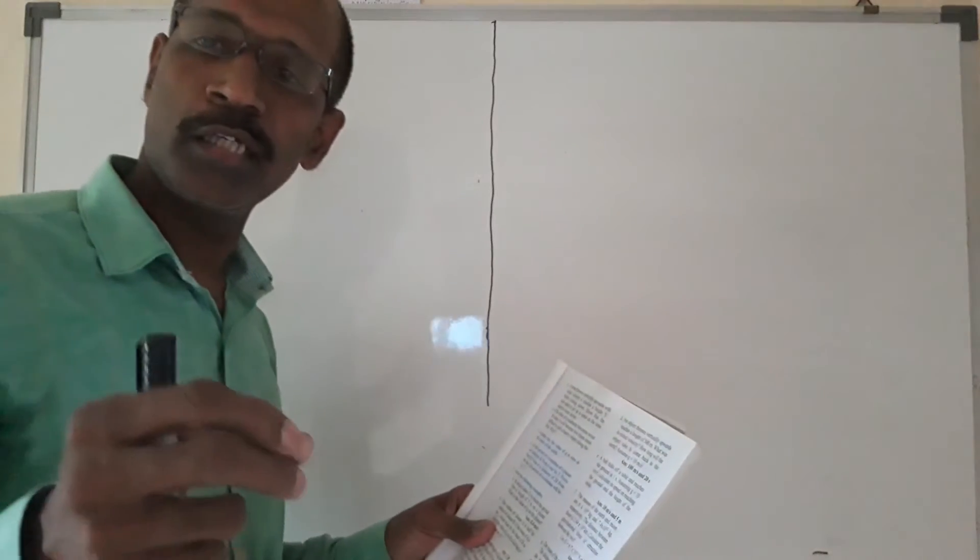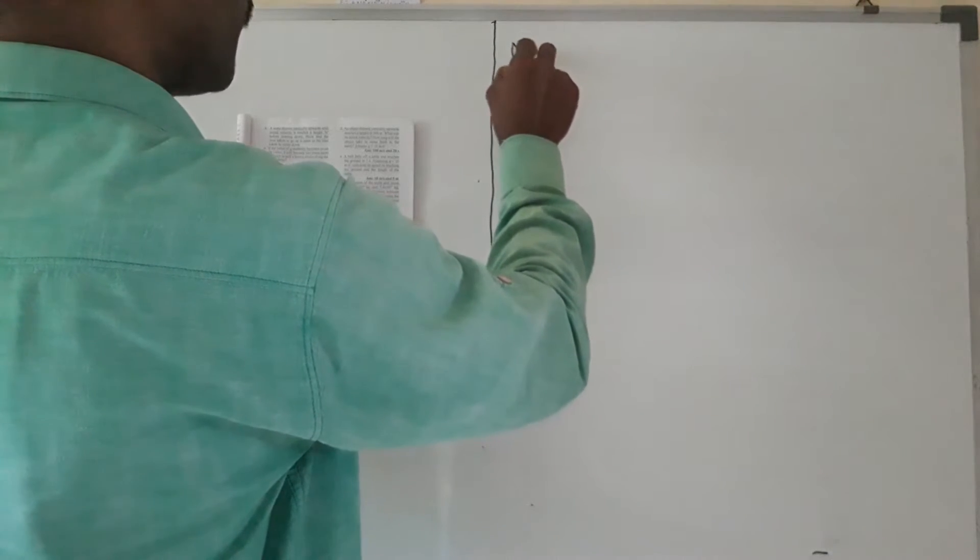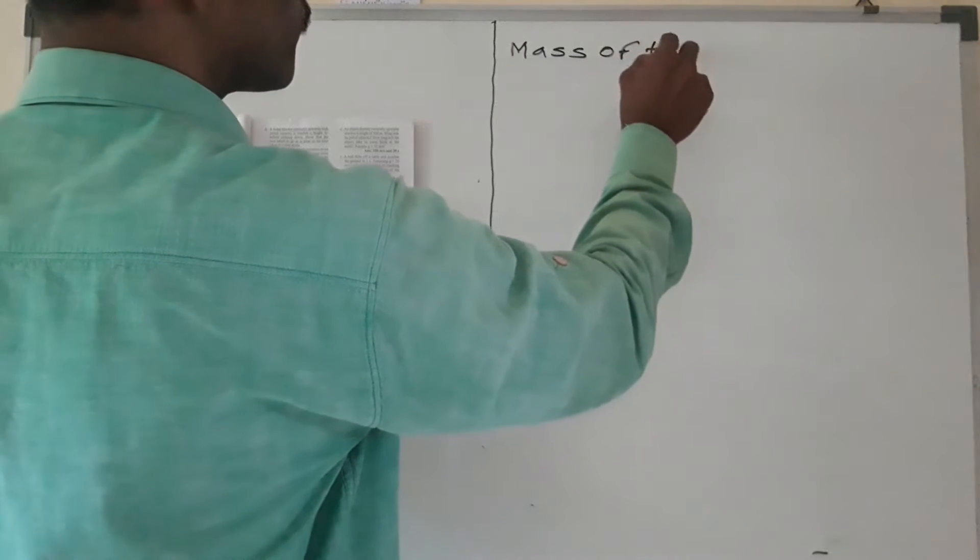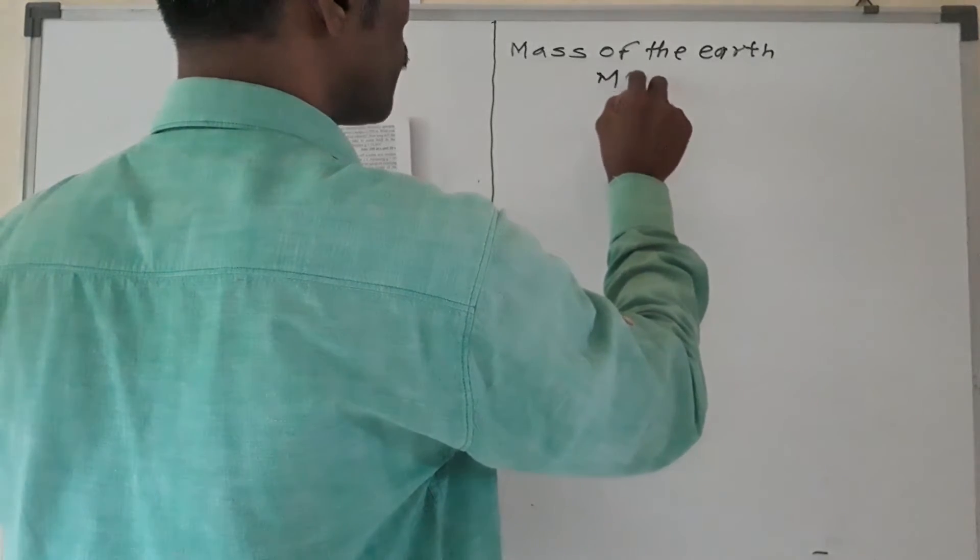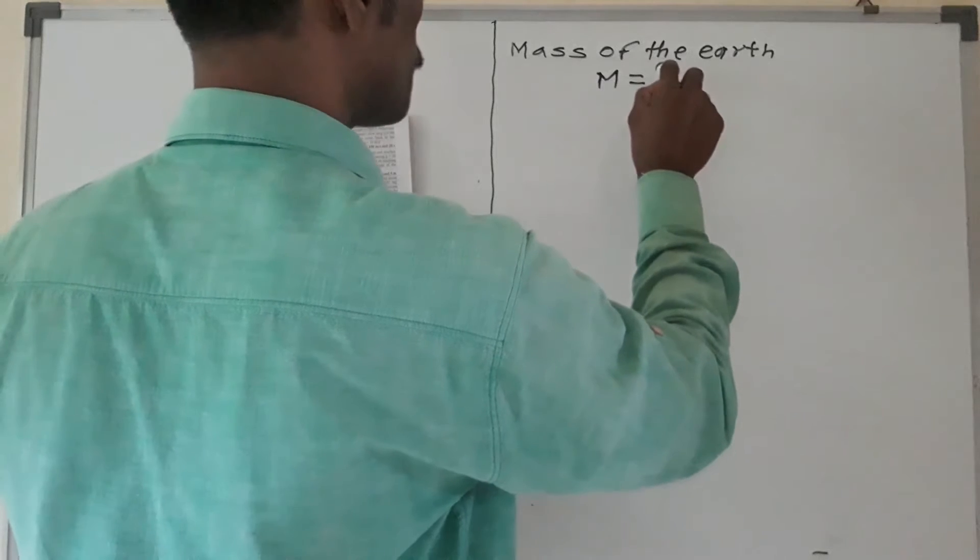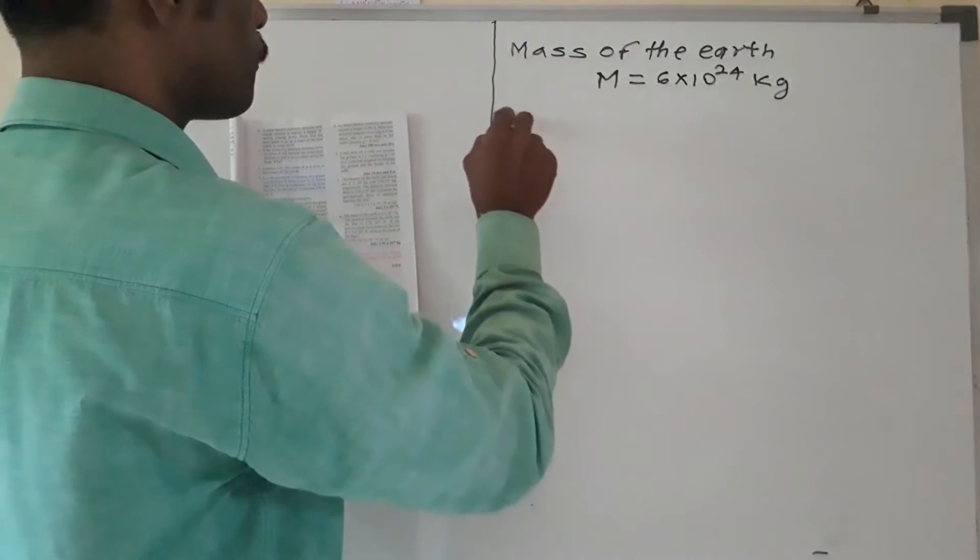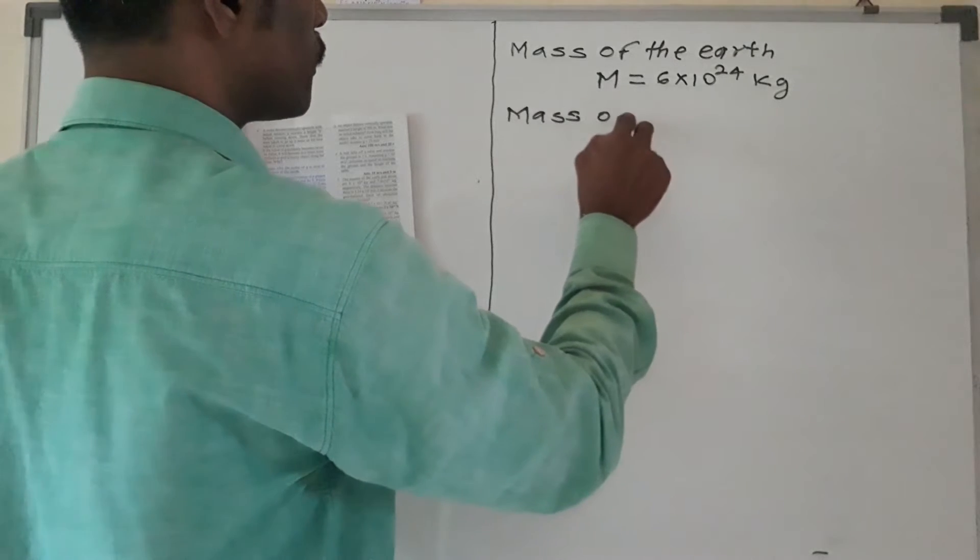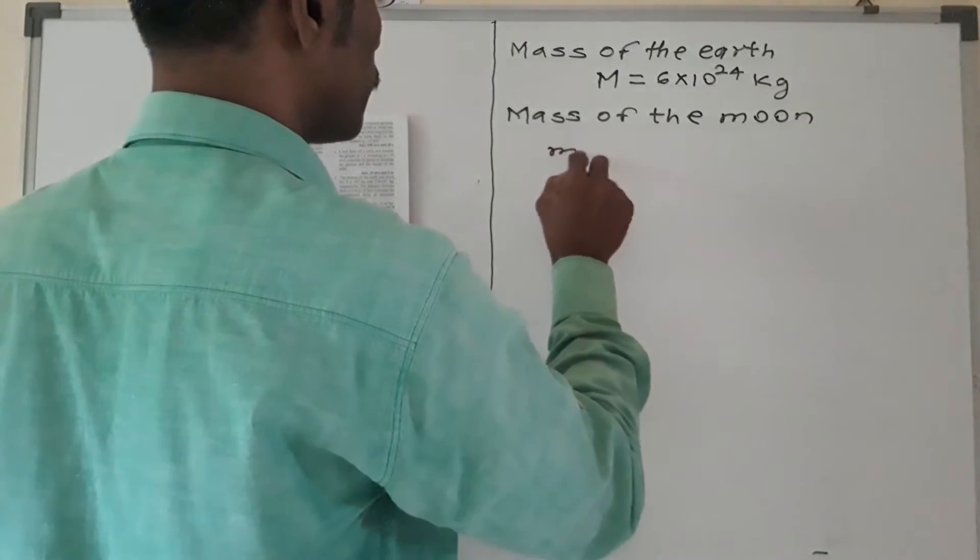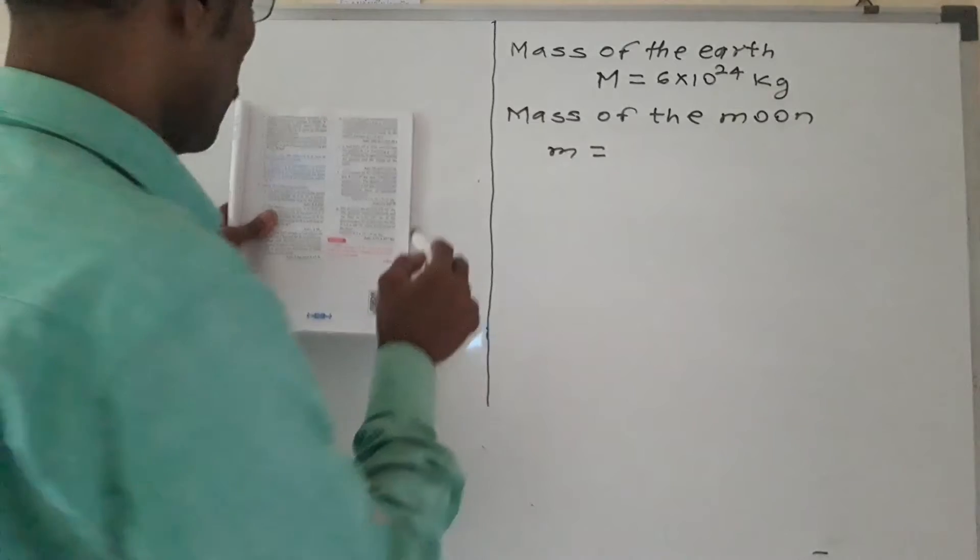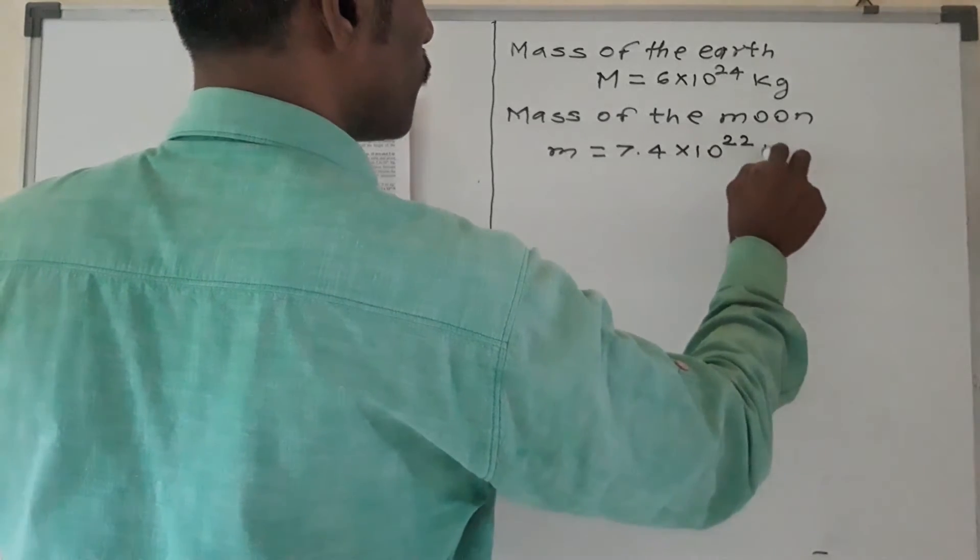Now I will first write given. Here first, mass of the earth - I will write here capital M. Capital M is equal to 6 into 10 raise to 24 kg. Then I will write here mass of the moon. Mass of the moon, I will take small m for that: 7.4 into 10 raise to 22 kg.